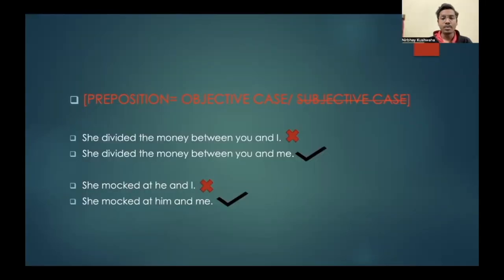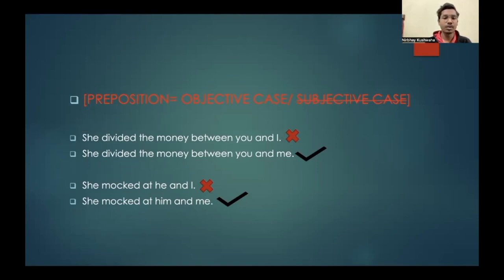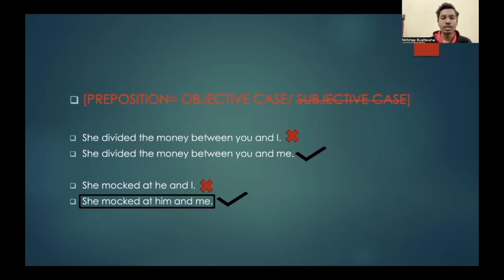Also, whenever there is a preposition in a sentence, it is followed by an objective case pronoun. For example: 'She divided the money between you and I.' Here 'between' is the preposition, so 'I' will be replaced by 'me', and the sentence becomes 'She divided the money between you and me.' In the second example: 'She mocked at he and I.' Here 'at' is the preposition, so 'he' and 'I' will be replaced by 'him' and 'me'. The sentence becomes 'She mocked at him and me.'